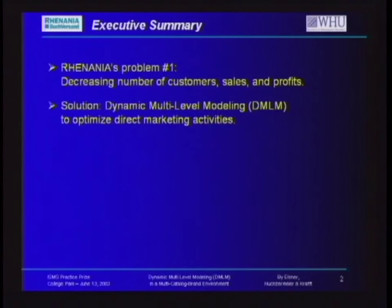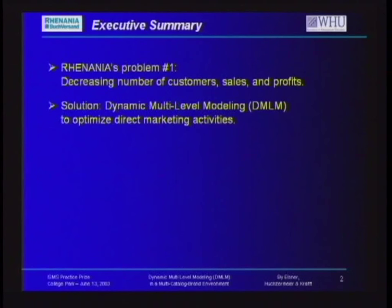What is it all about? In the mid-90s, Renanya had a huge problem. We had a decreasing number of customers, sales and profits. We solved that problem with a model called dynamic multi-dimensional modeling to optimize our direct marketing activities. That moved us up from a weak number five position in our market to number two.